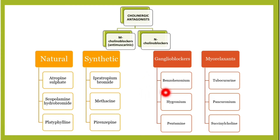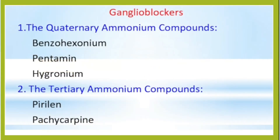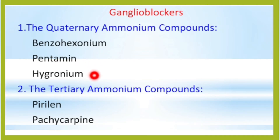Ganglion blockers can be classified into two groups: quaternary ammonium compounds and tertiary ammonium compounds. Quaternary compounds include benzoyl hexonium, pentamine, and hygronium. Tertiary compounds include pirylene and pachycarpine.